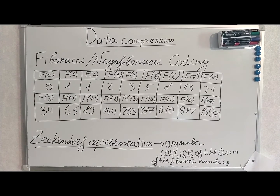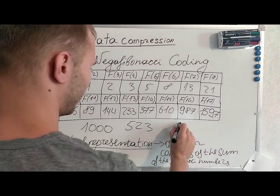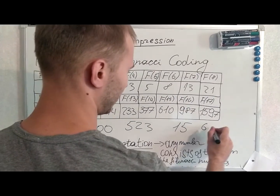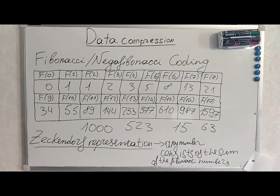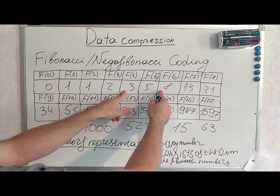The name Zeckendorf representation is not crucial to memorize, but what it does is important. It is a theorem which states that any number can be expressed as the sum of Fibonacci numbers. Any number — say 1523 or 15 — consists of Fibonacci numbers. For example, 63 can be represented as a sum of Fibonacci numbers that do not follow each other consecutively; there will always be at least one gap between them.